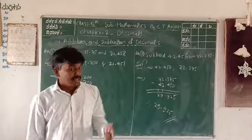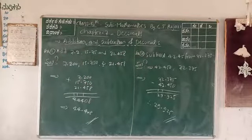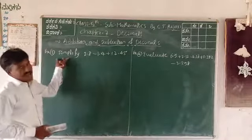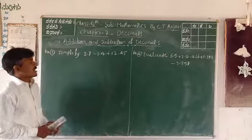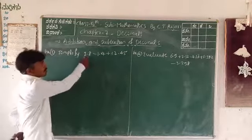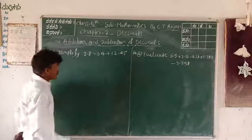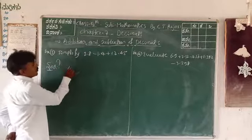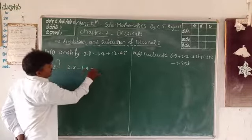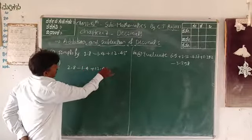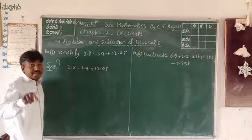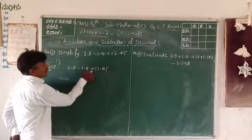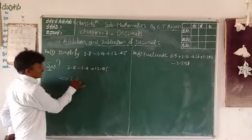Next example 3: simplify. There are three decimal numbers — one positive, one negative, one positive. The expression is 2.8 minus 1.4 plus 12.45. Write as like decimals with two decimal places: 2.80, minus 1.40, plus 12.45.